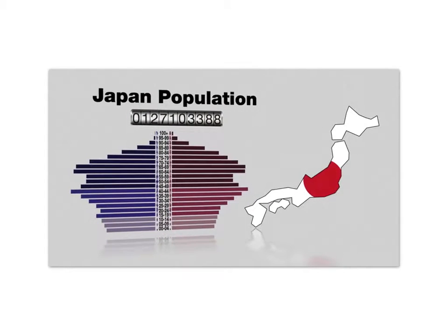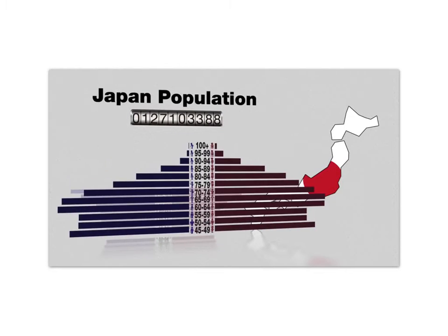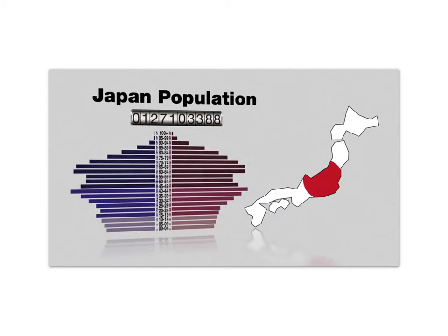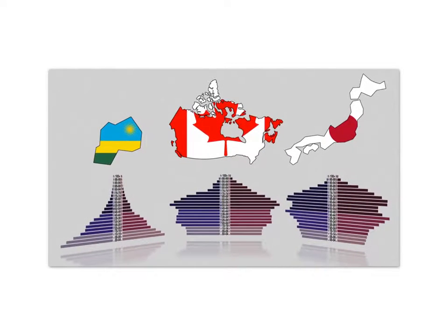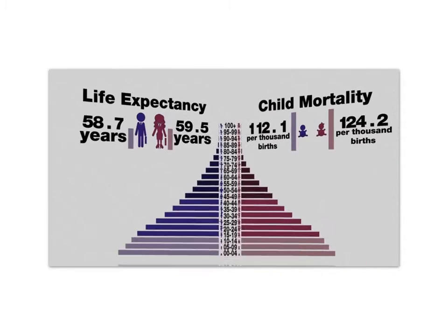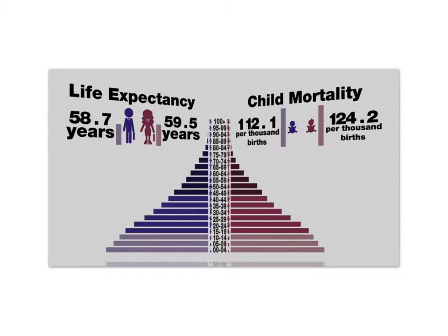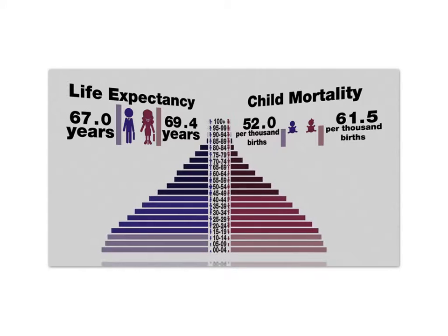In Japan, the majority of the population is in its post-reproductive years, and the number of people is smaller at each younger interval. At current rates of reproduction, the population will begin to decline as fewer and fewer people reach reproductive age. Comparing these three population pyramids shows three different stages in the demographic transition as a country moves from a pre-industrial society to an industrial or post-industrial economy. Countries that have recently begun industrialization typically see increased life expectancy and a fall in child mortality rates due to improvements in medicine, sanitation, and food supply, while birth rates remain constant, leading to a population boom.